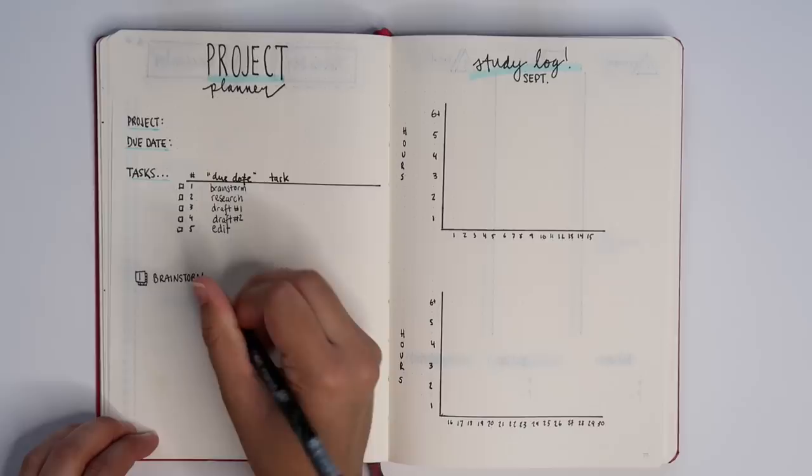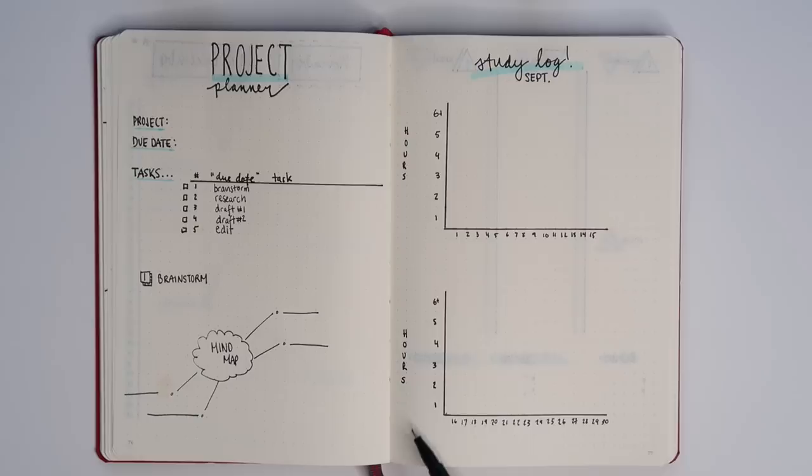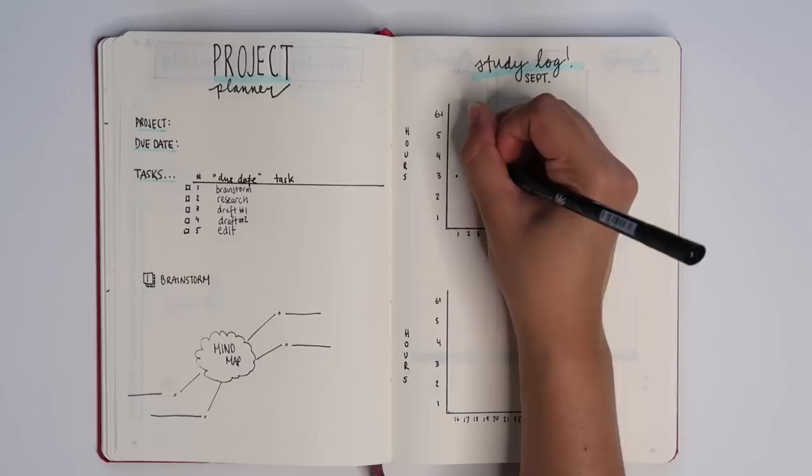On the next page I have a line graph system for a study log. The days of the month are on the x-axis, on the y-axis you have the hours studied. So on day one you may do three hours, day two you may do four, on day three you may do, oh you're a bad student, you did one, and then you'd connect them.